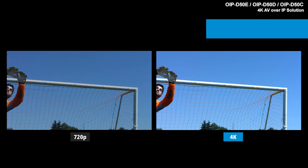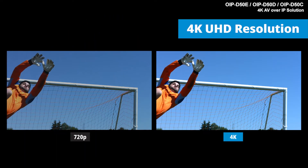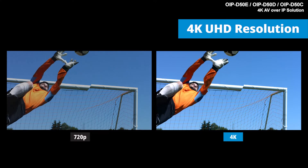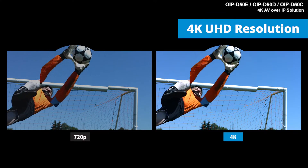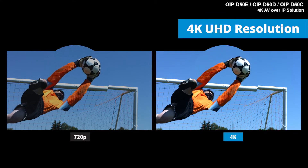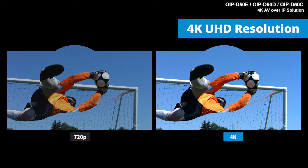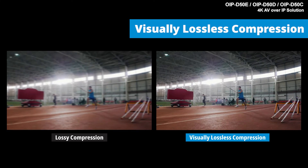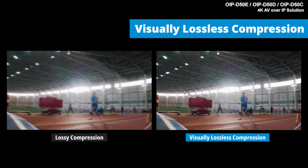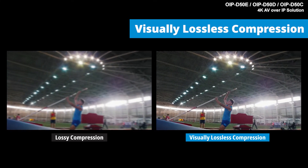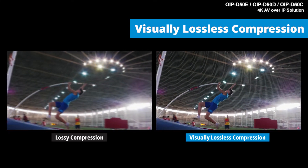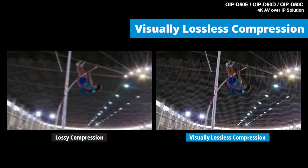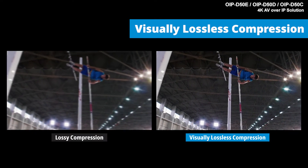Distribute uncompressed 4K ultra HD resolution quickly and easily with the OIP series. Powerful visually lossless compression technology enables shrinking video file size without losing video quality, at fast speed.